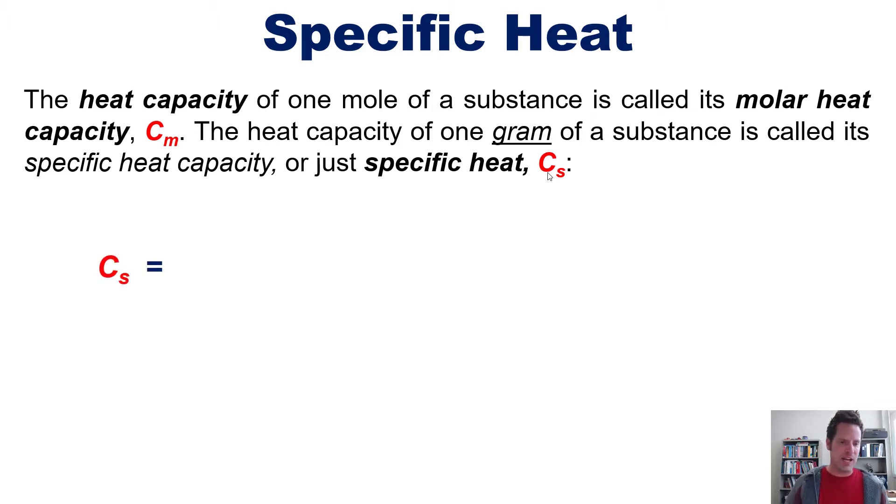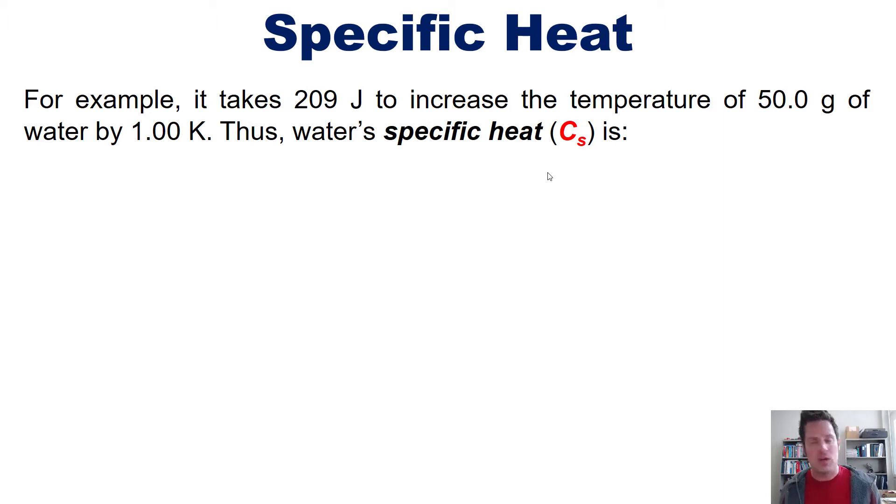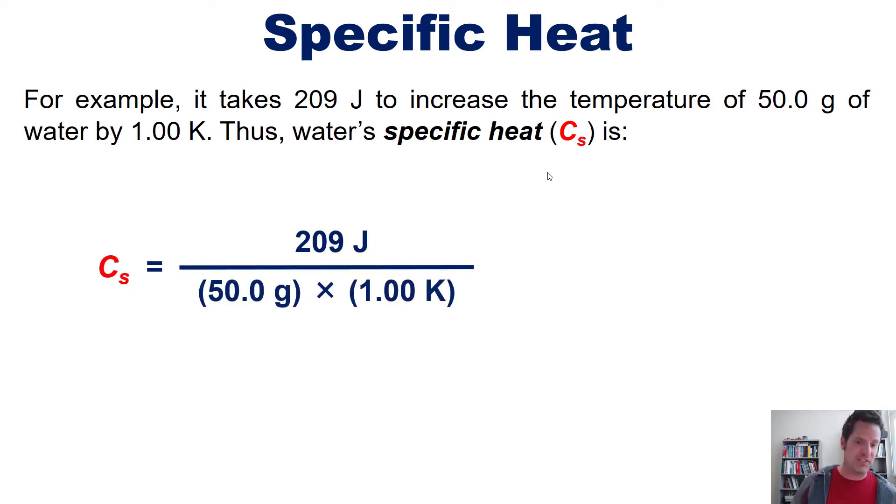The specific heat is defined by this equation. It's equal to the amount of heat transferred divided by the grams of the substance times the temperature change. For example, it takes 209 joules to increase the temperature of 50.0 grams of water by one kelvin. Thus, water's specific heat is 209 joules divided by 50 grams times one kelvin. If you throw that in your calculator and round to the correct number of significant figures, you come to this final answer of 4.18 joules per gram kelvin. This means that if you have one gram of water and you want to raise its temperature by one kelvin or one degree celsius, you'd have to invest 4.18 joules.